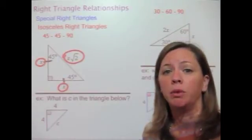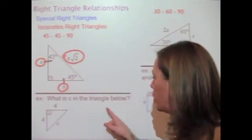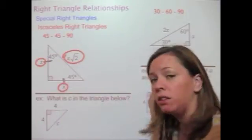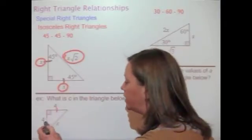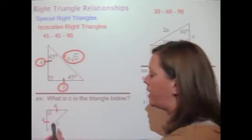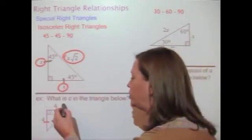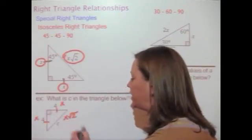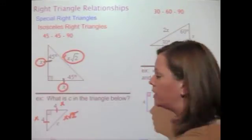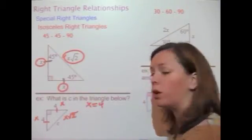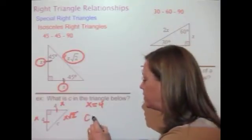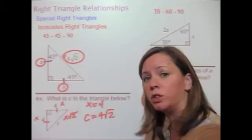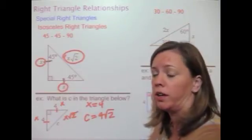Let's look at a quick example. In this triangle, what is the value of c? I know it's an isosceles right triangle because two of the sides are both 4 and there's a 90-degree angle. Because of that, the sides have the relationship x, x, and x√2. Since x equals 4, c is simply equal to 4 times the square root of 2. That's the easier of the two special right triangles.